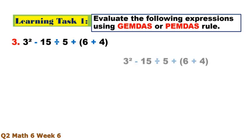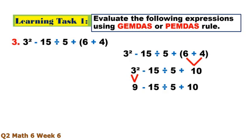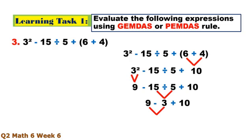Number 3. In this expression, parenthesis first: 6 plus 4 equals 10. Followed by exponent: 3 to the second power is 9. Followed by multiplication or division — division: 15 divided by 5 equals 3. Then from left to right, subtraction first before addition: 9 minus 3 is 6, plus 10 equals 16.